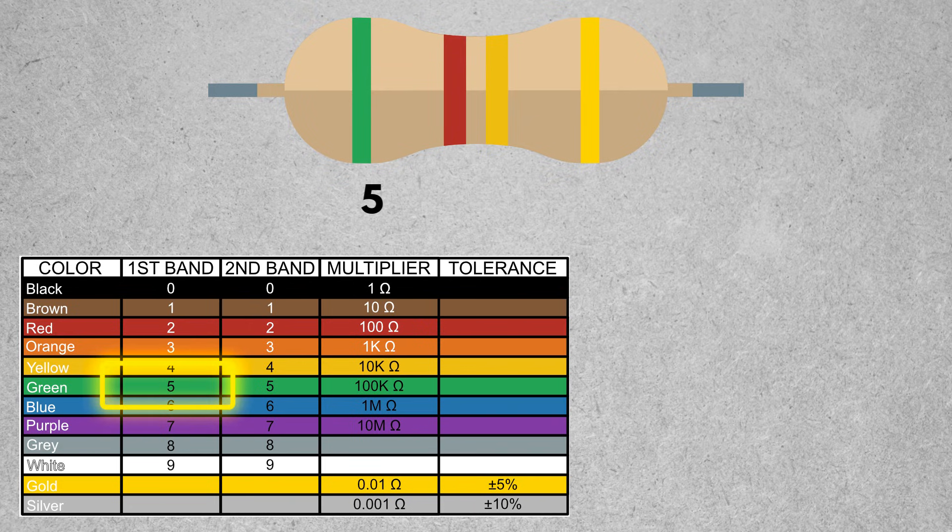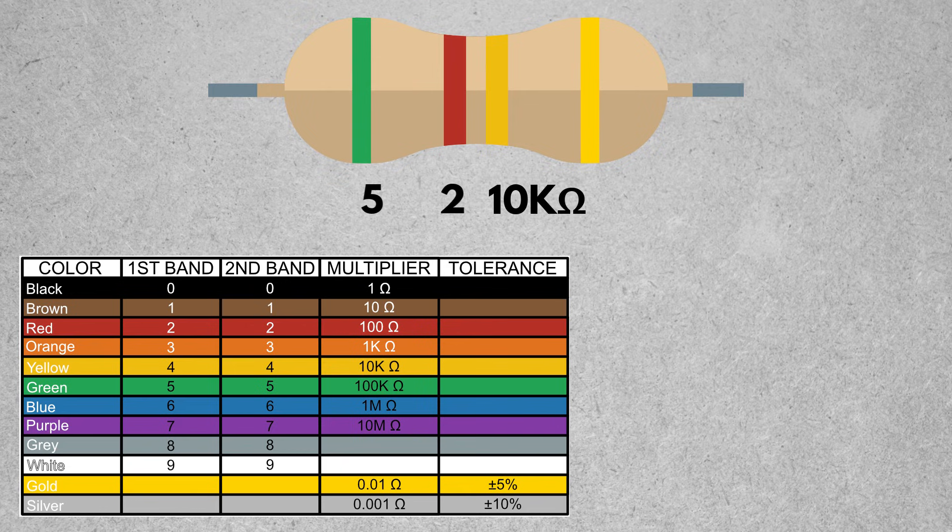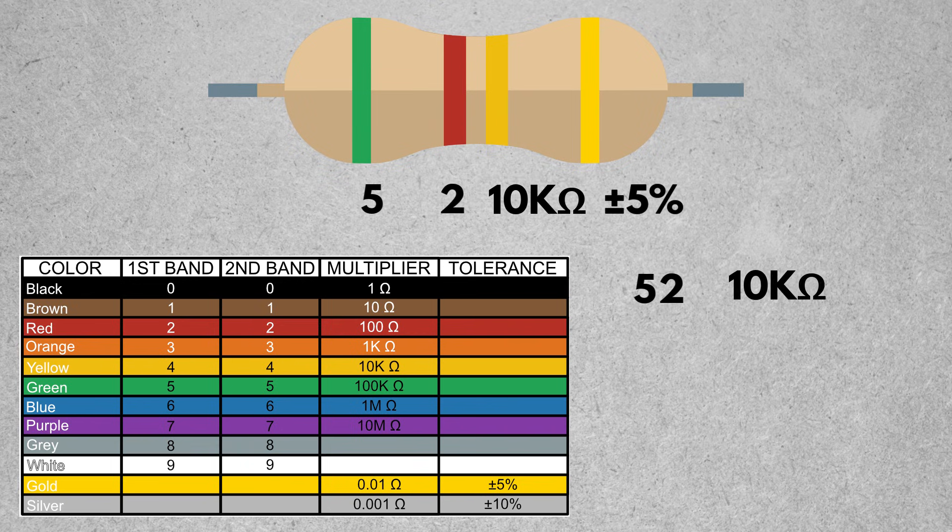For green, our first digit should be 5. Our second digit is red, so it should give us a value of 2. And then our multiplier is 10k in the yellow spot. So what we do is we take 5, 2, and we have 52, times 10k.